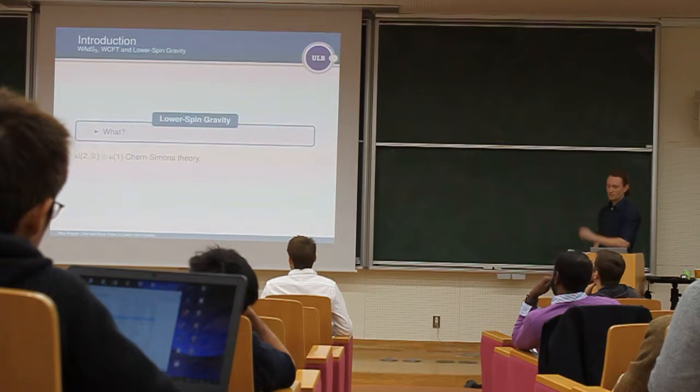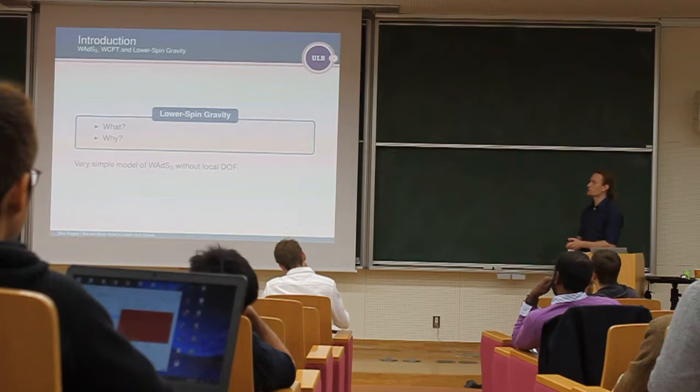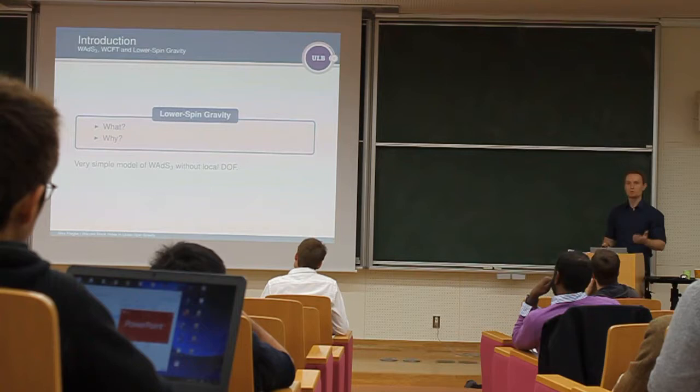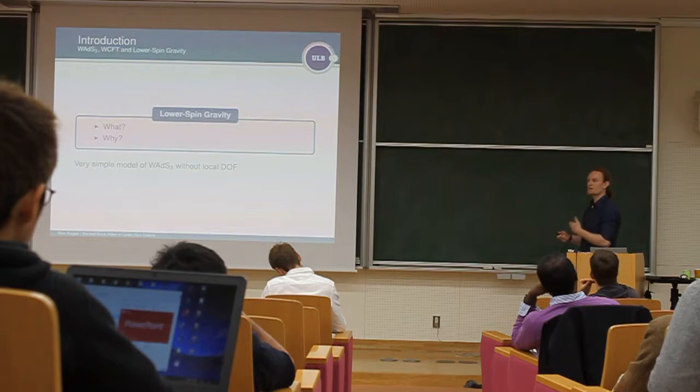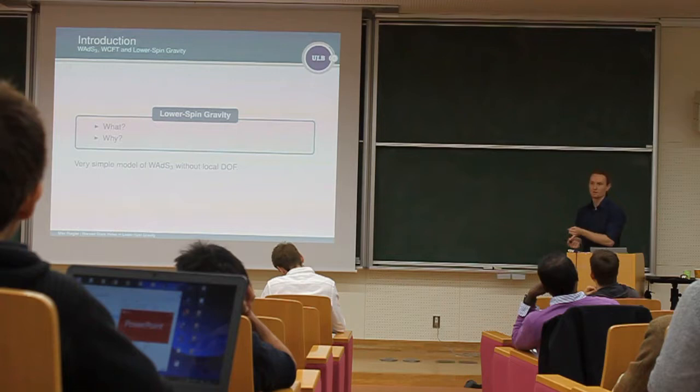And it's interesting to study that model, exactly because it's a very, very easy and simple model of Warped AdS-3, and in particular, it does not have local degrees of freedom. Because previously, other models, like TMG, for example, that were used to model Warped AdS space times, have some features that are not very nice in the sense that you either need ghost contributions or higher derivatives. So, in that sense, this is a very, very simple model to model Warped AdS space times.